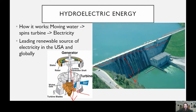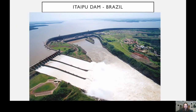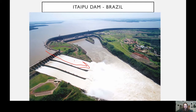Hydroelectric is the leading renewable energy source in the world. There are some really impressive examples — the Itaipu Dam, on the border of Brazil and Paraguay (or Uruguay), blocks off an enormous section of water. This particular dam actually powers the entire electrical grid of one of those countries and a significant chunk of Brazil's electric grid as well. These can be extremely powerful and useful energy resources.